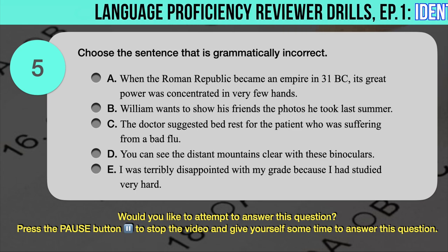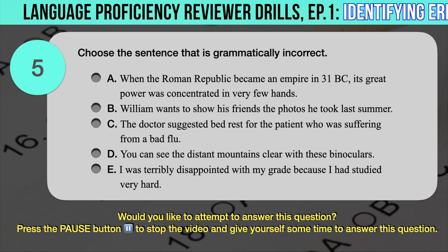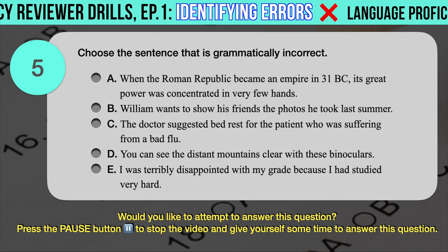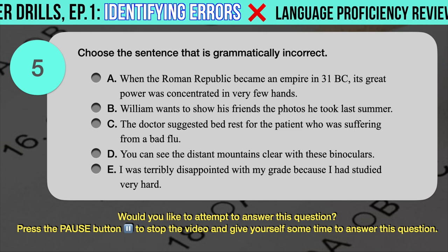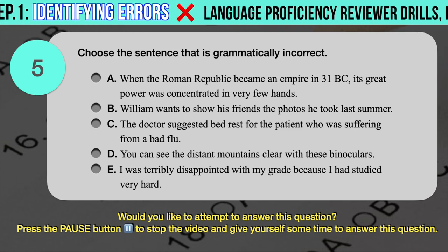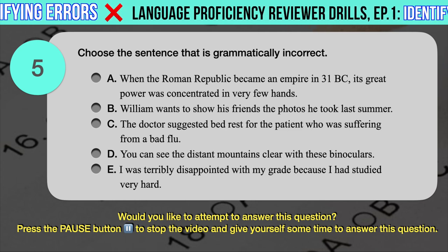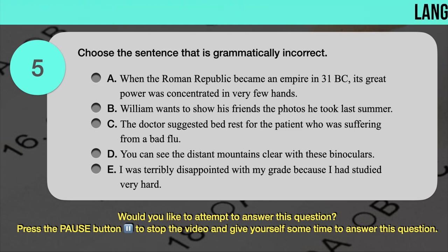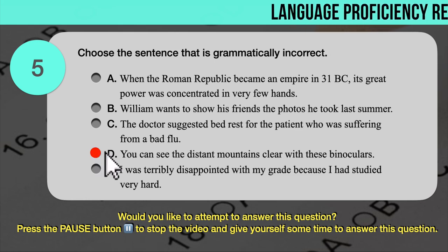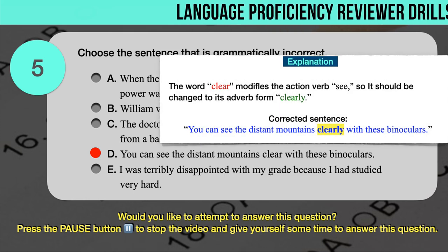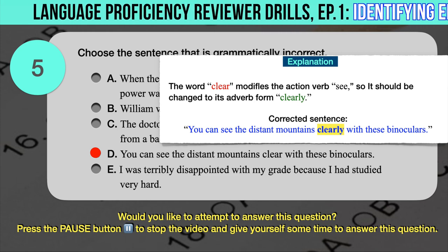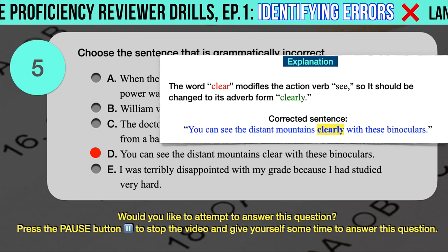Drill question number 5. Choose the sentence that is grammatically incorrect. A. When the Roman Republic became an empire in 31 BC, its great power was concentrated in very few hands. B. William wants to show his friends the photos he took last summer. C. The doctor suggested bed rest for the patient who was suffering from a bad flu. D. You can see the distant mountains clear with these binoculars. E. I was terribly disappointed with my grade because I had studied very hard. The correct answer is D. The word 'clear' modifies the action verb, so it should be changed to its adverb form 'clearly.' Corrected: You can see the distant mountains clearly with these binoculars.